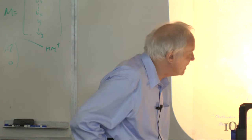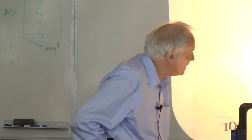Turning to the quantum information theoretic point of view—a well-defined interpretation, really an updated version of the Copenhagen interpretation—there are various subversions of this point of view, such as the so-called consistent histories interpretation.